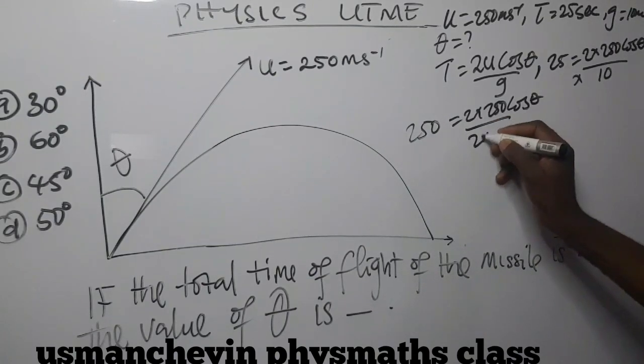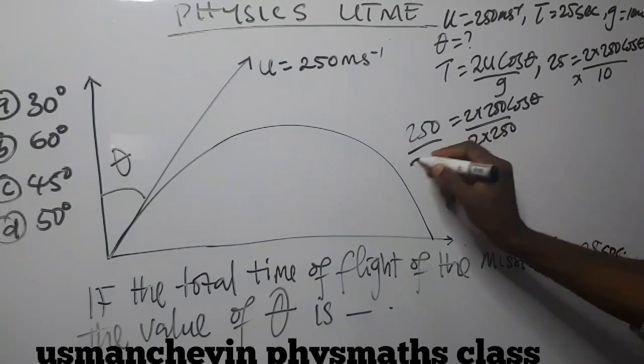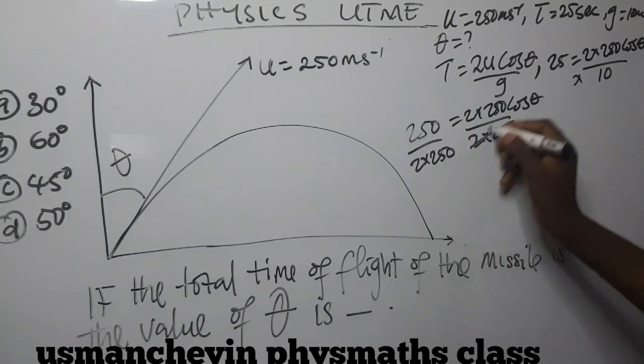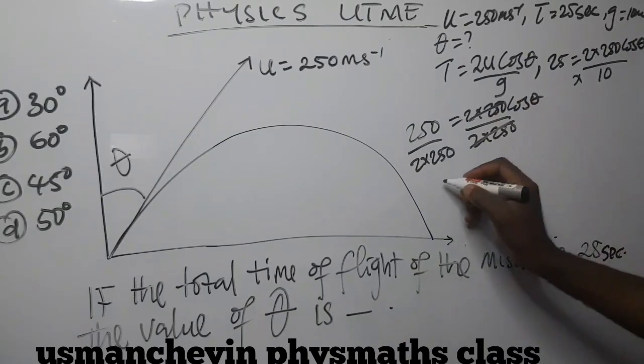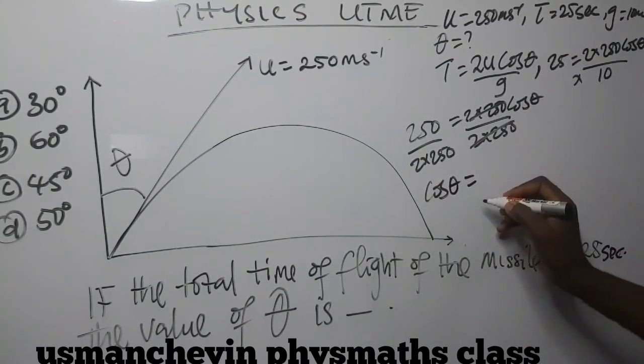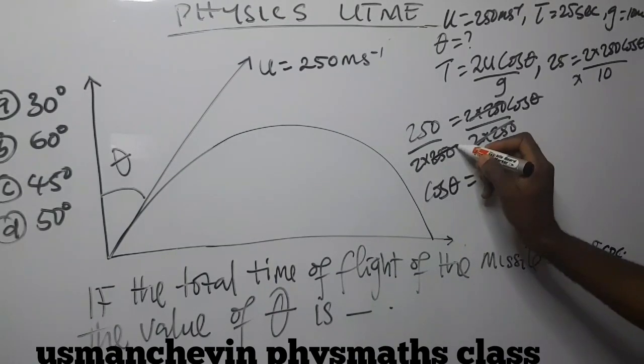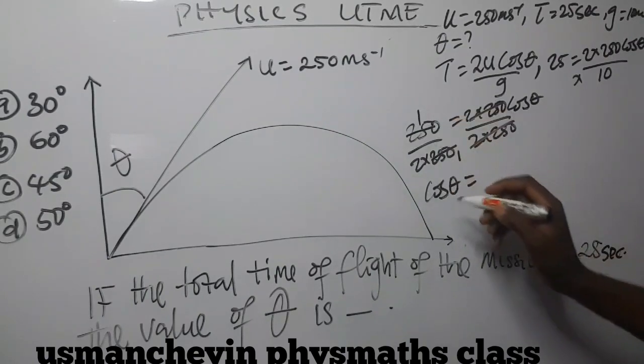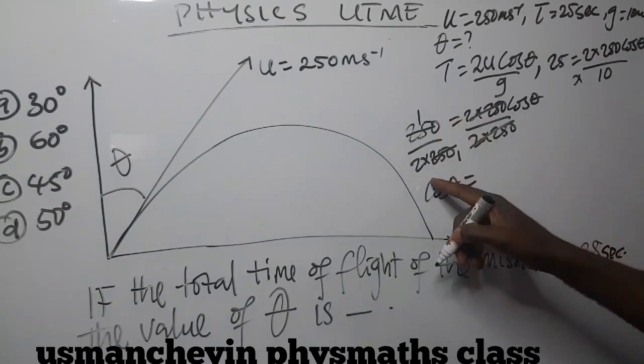2 times 250, and this will cancel this. So we can now set our cos theta will be equal to 250 will cancel 250 one time. So we'll be left with 1 divided by 2.